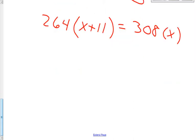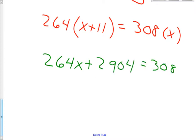So now we're going to use the distributive property. 264 times x is 264x. 264 times 11 is 2904, plus 2904. That equals 308x.